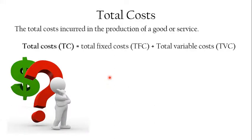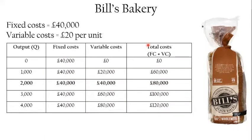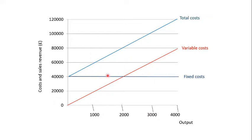Total costs are the final set of costs you need to be aware of, and they're very important for a business to know. You find total costs by adding total fixed costs and total variable costs: TFC + TVC = TC. The total cost is simply your fixed and variable costs added together, as shown in this table.